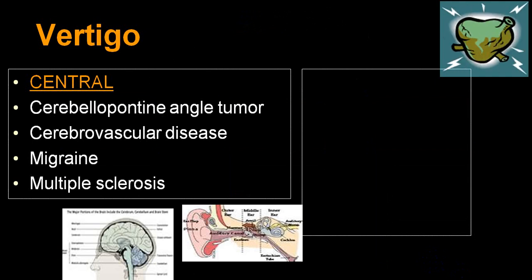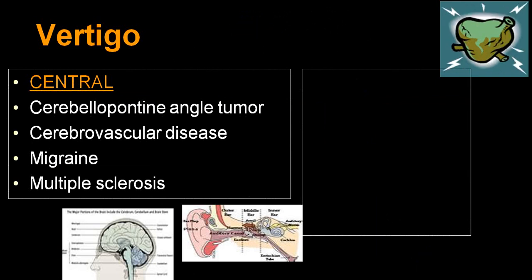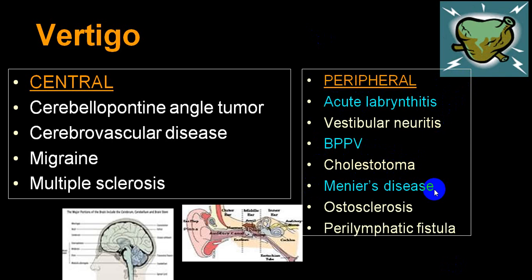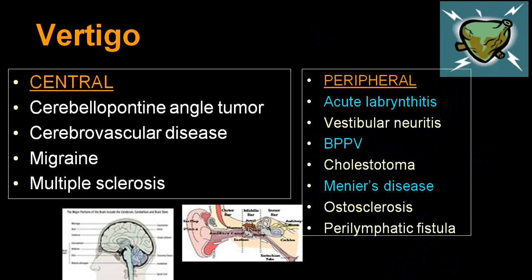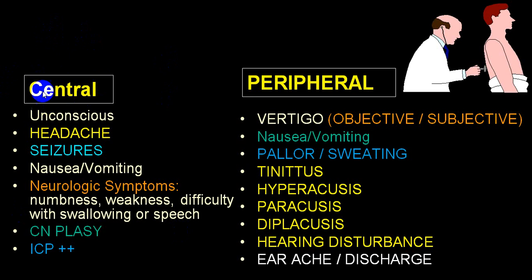For central vertigo, the most common causes are CP angle tumors, cerebrovascular disease particularly vertebrobasilar territory disorder, vertiginous migraine, and multiple sclerosis. In central variety, the person may have altered level of consciousness up to full unconsciousness; frequently complain of headaches, seizures, nausea, vomiting; will have neurological symptoms and signs of brainstem damage, cerebellar signs, cranial nerve palsy, and signs suggestive of raised intracranial pressure or meningeal signs.